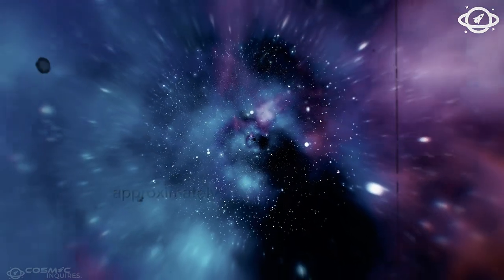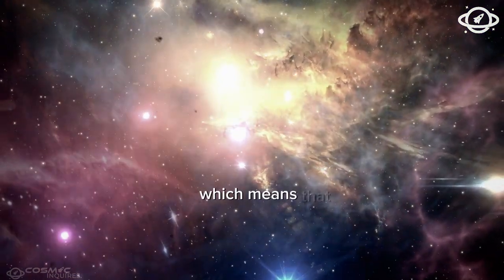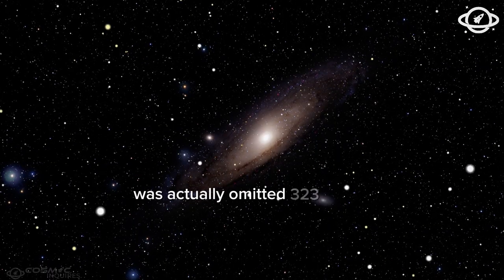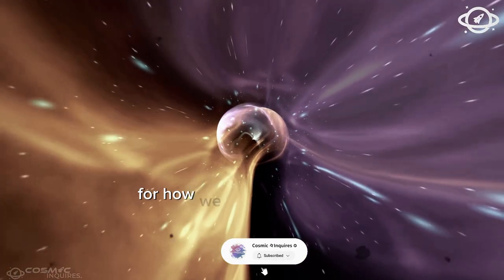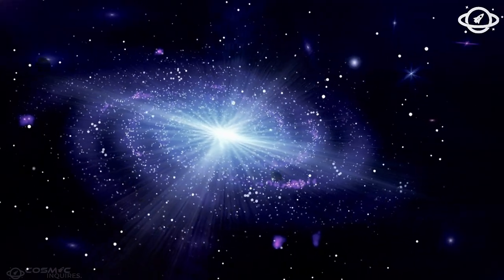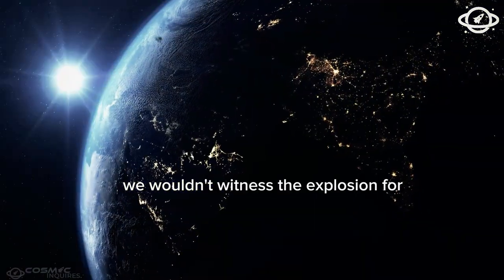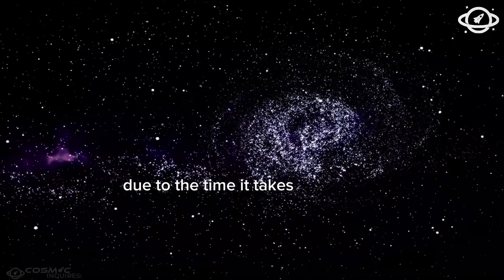Polaris is located approximately 323 light-years away from Earth, which means that the light we currently see from the star was actually emitted 323 years ago. This temporal distance has profound implications for how we perceive stellar events. If Polaris were to explode today, we wouldn't witness the explosion for another 323 years due to the time it takes for the light to reach us.